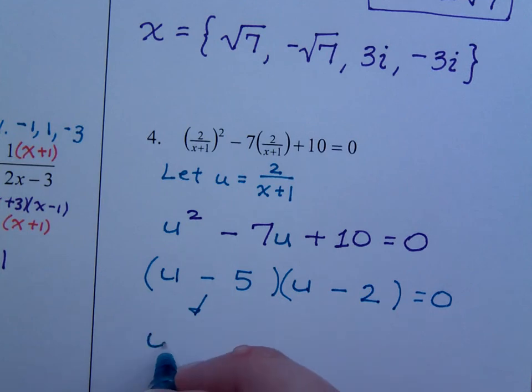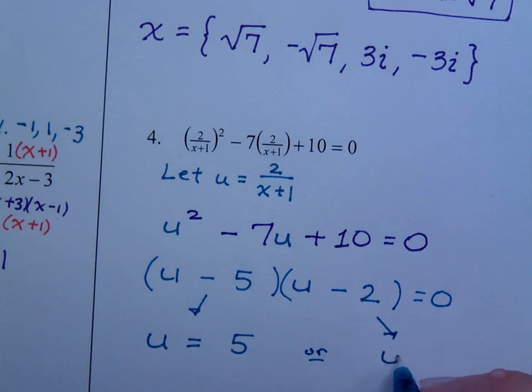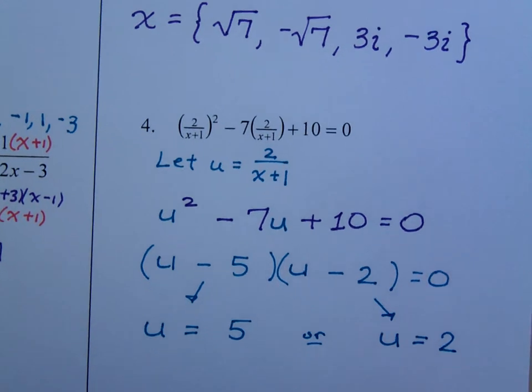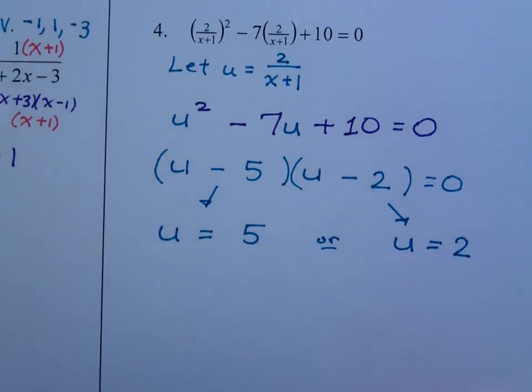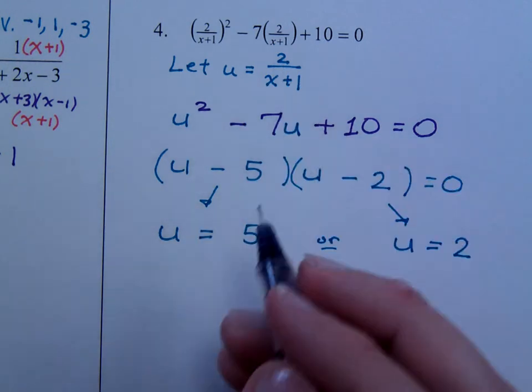Using that zero factor theorem, u equals 5 or u equals 2. We're not done though. That's just part of it. Remember how u represented something else? u is 2 over x plus 1. Now we make this little conversion.